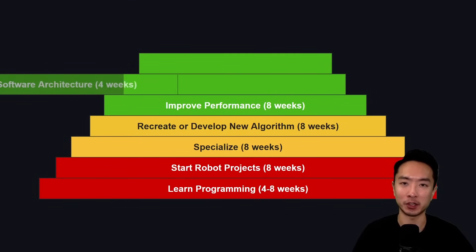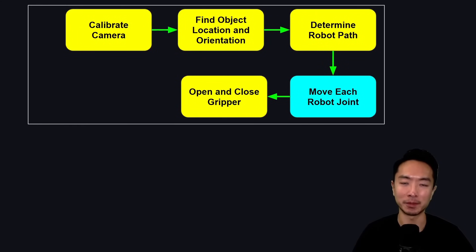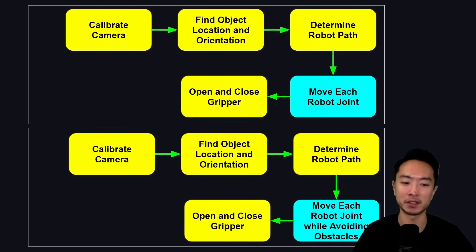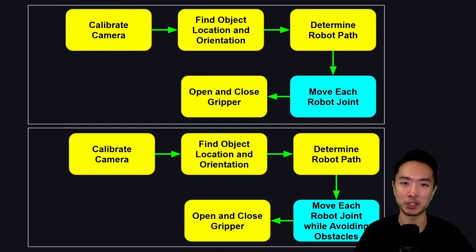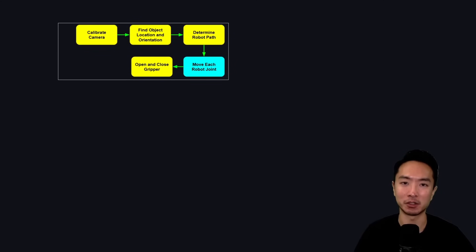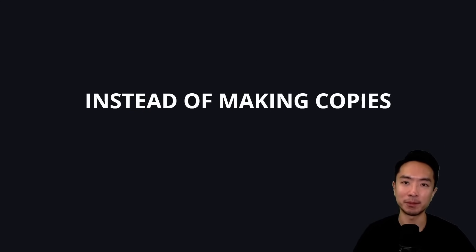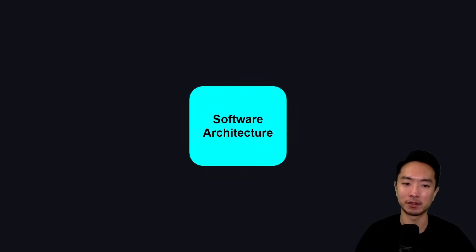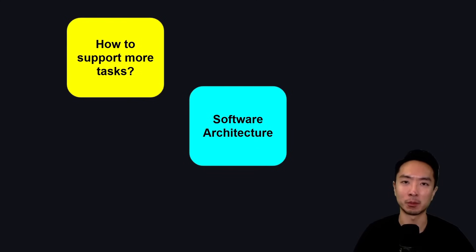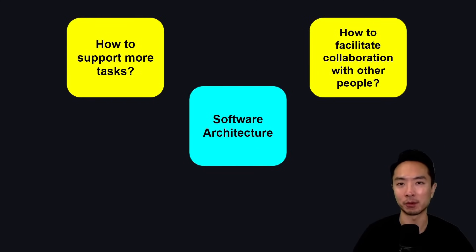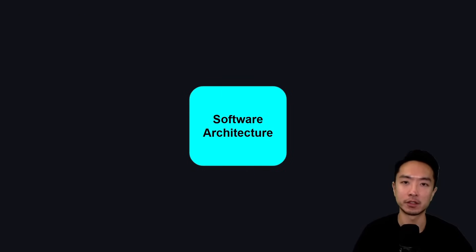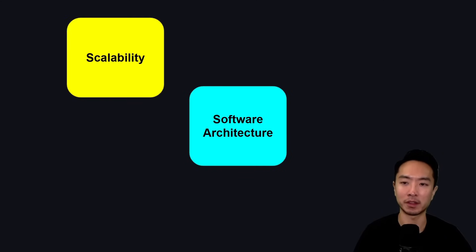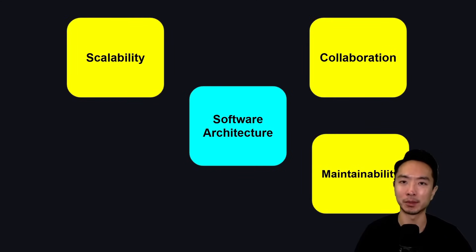The next step is software architecture. Spend about four weeks here. If you made a change to avoid obstacles and simply made a complete copy of your entire program, you'd end up with a lot of copies of the same code. Instead, ask: how can you organize your code to adapt to changes? Software architecture addresses questions like how to support more tasks, how to facilitate collaboration, how to keep code functioning, and how to make changes. It helps with scalability, collaboration, maintainability, and adaptability.